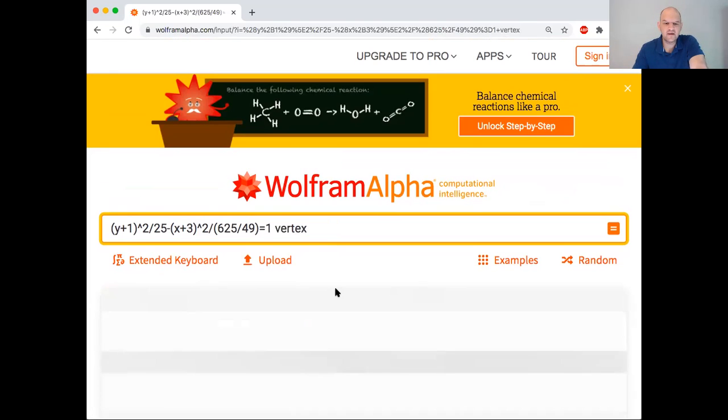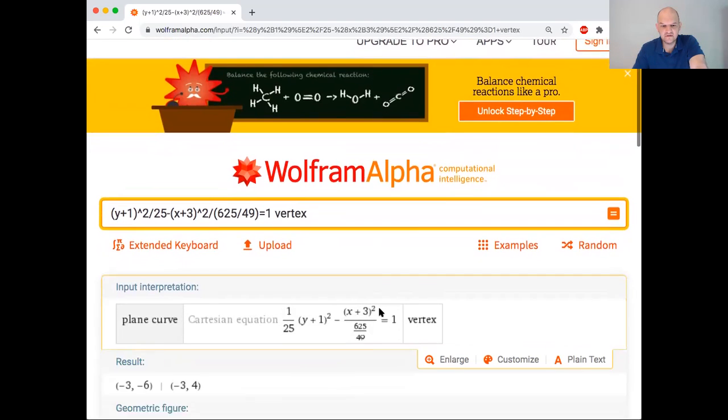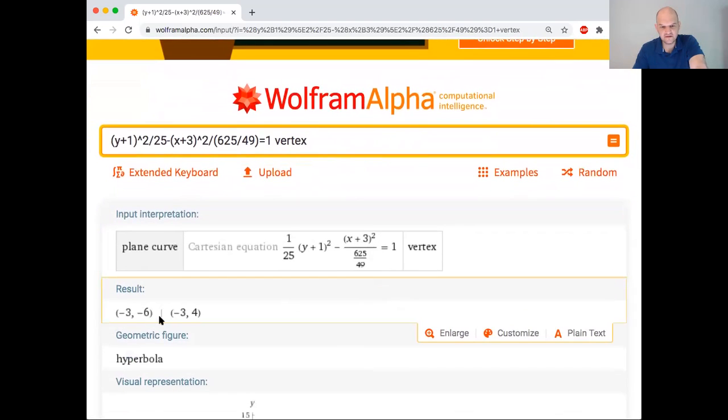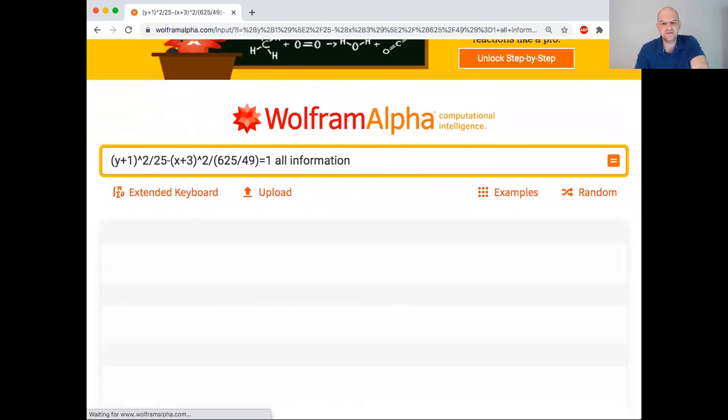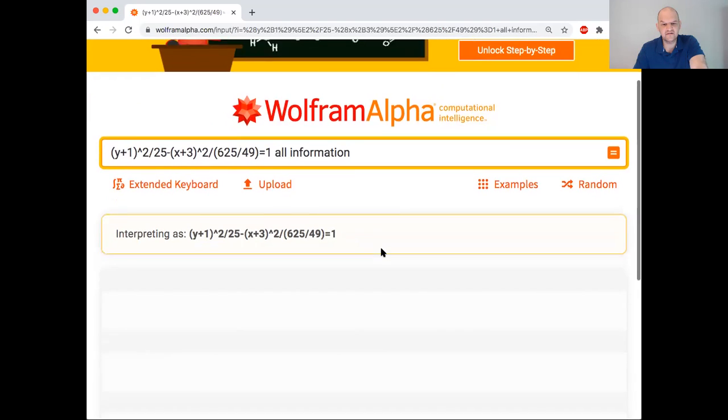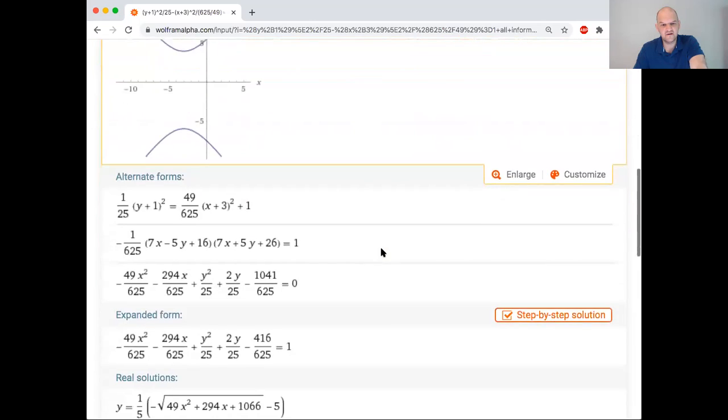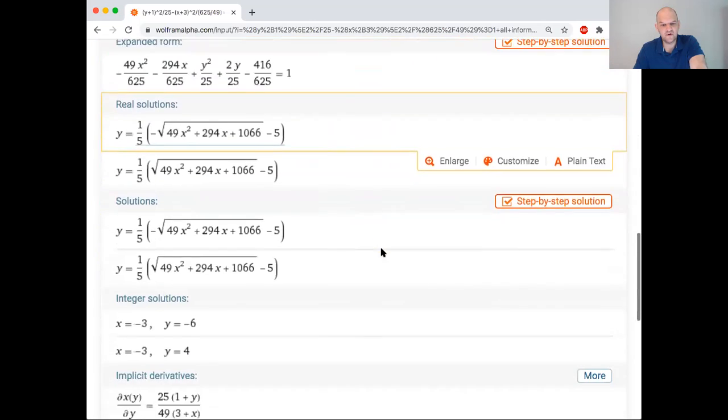So what the heck? Vertex maybe? I feel like I should be able to get these. Vertex. Hey, there we go. All information. I don't know. Attributes maybe. It's like, you gotta figure out how to get it to tell you the things that it knows.